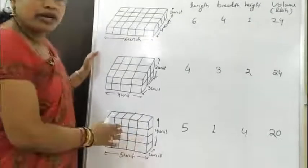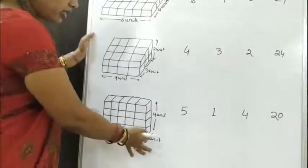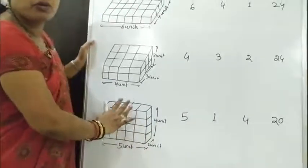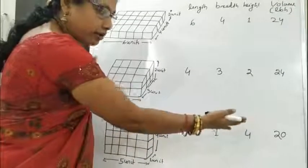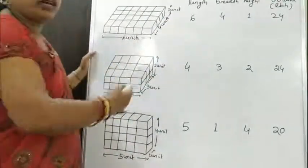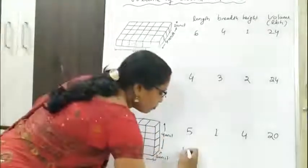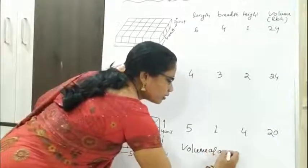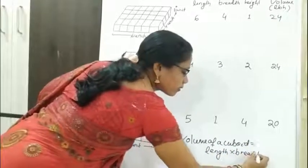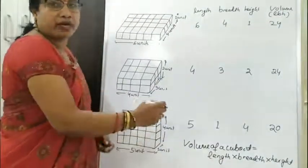Here I have taken 20 unit cubes arranged to form a cuboid having length 5 units, breadth 1 unit, and height 4 units. So the total cuboid has volume 20 cubic units, which is obtained by multiplying length, breadth, and height. From these three activities, we conclude that the volume of a cuboid is length × breadth × height. This is the formula to find the volume of a cuboid when length, breadth, and height are given.